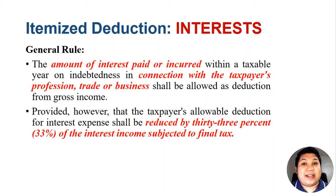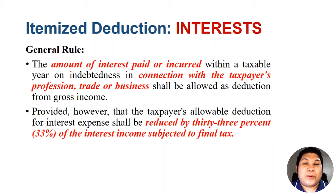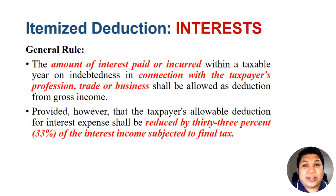The taxpayer's allowable deduction for interest expense shall be reduced by 33% of the interest income subjected to final tax. Before an interest can be deducted from our gross income, always remember that some interest expenses are subject to this limit — the 33%. This means that if the taxpayer incurred interest expense and also earned interest income subjected to final tax, such as interest income from bank deposits or foreign currency deposits, which are subject to 20% and 15% final tax respectively, we must first multiply the interest income by 33% and deduct that amount from our interest expense. Later in this video, I will illustrate how this limit is computed.